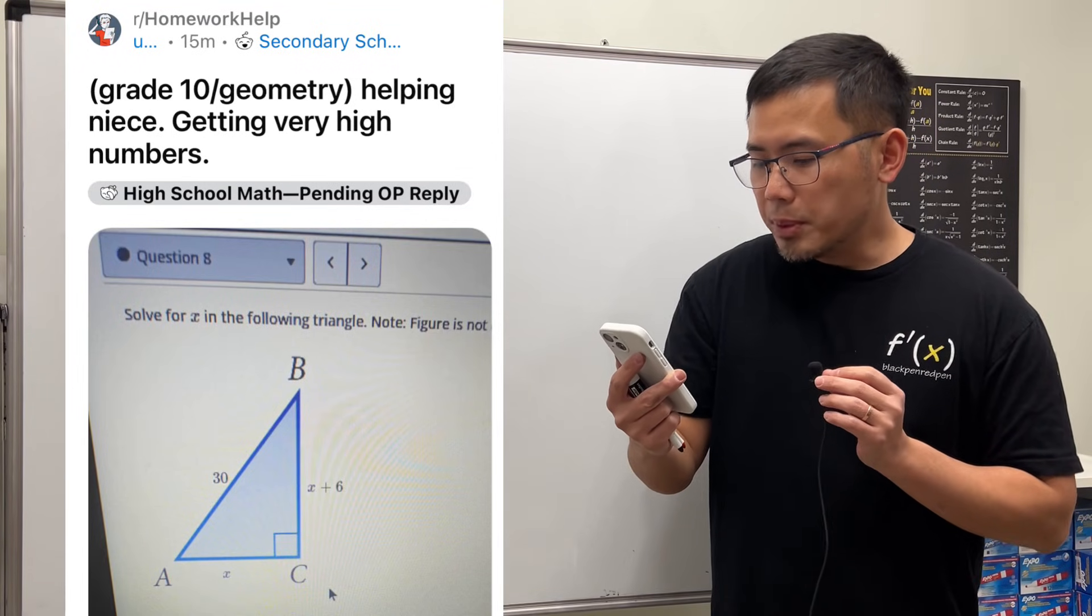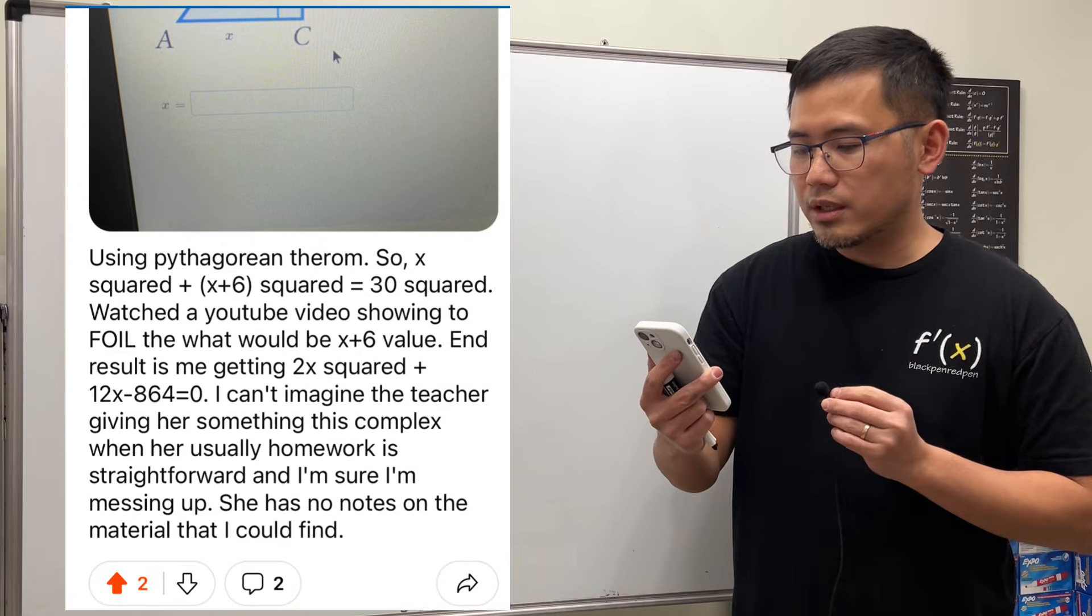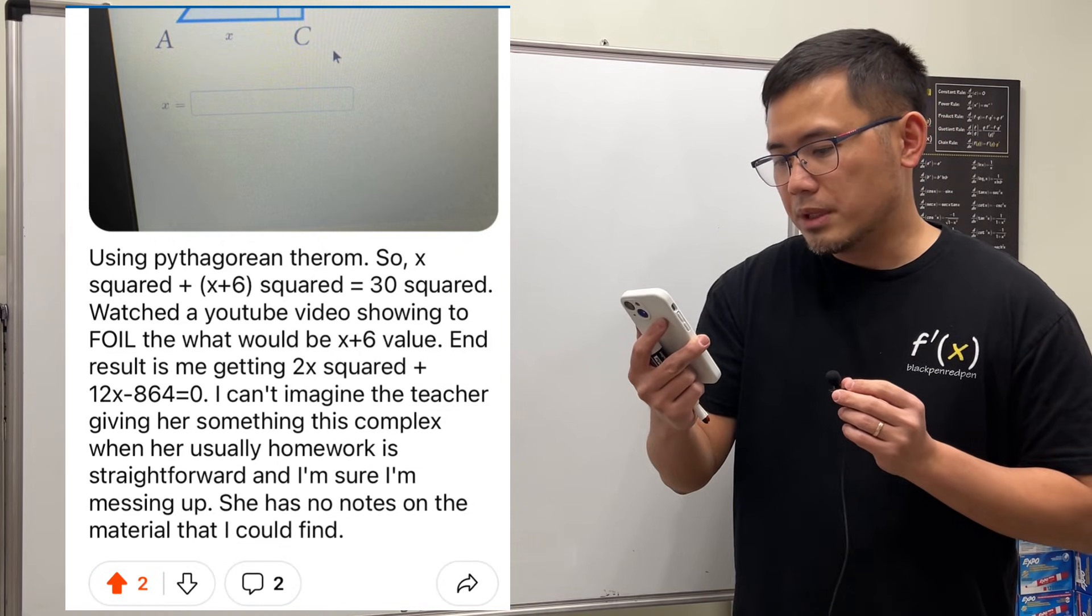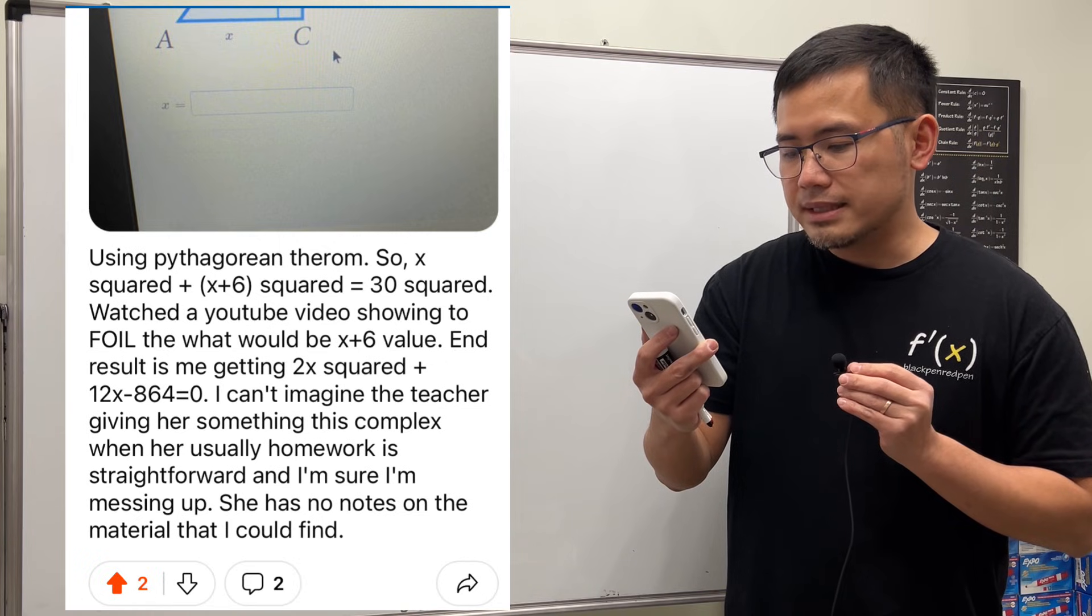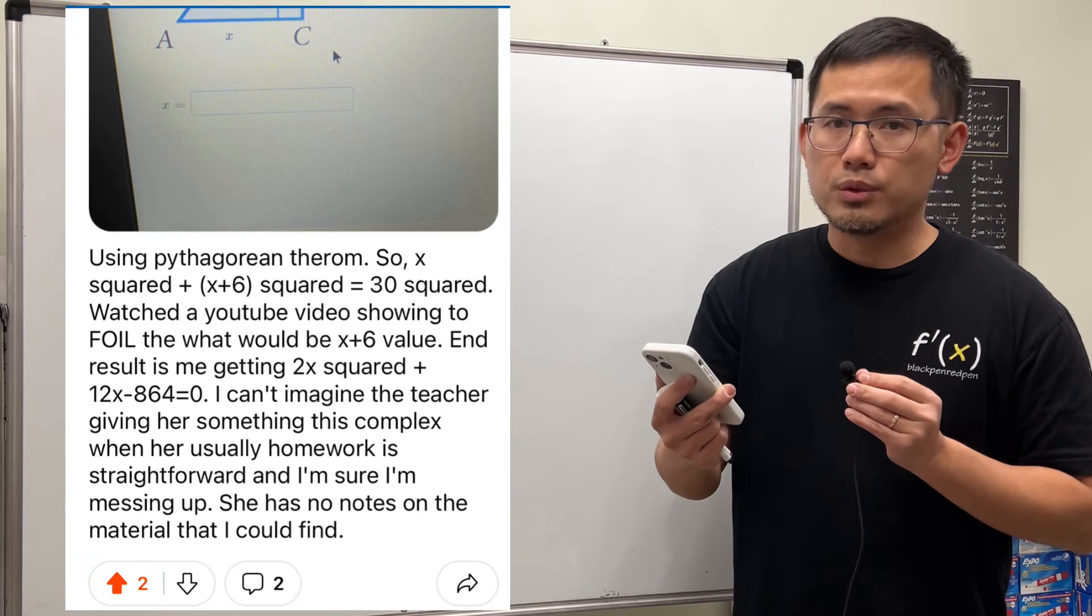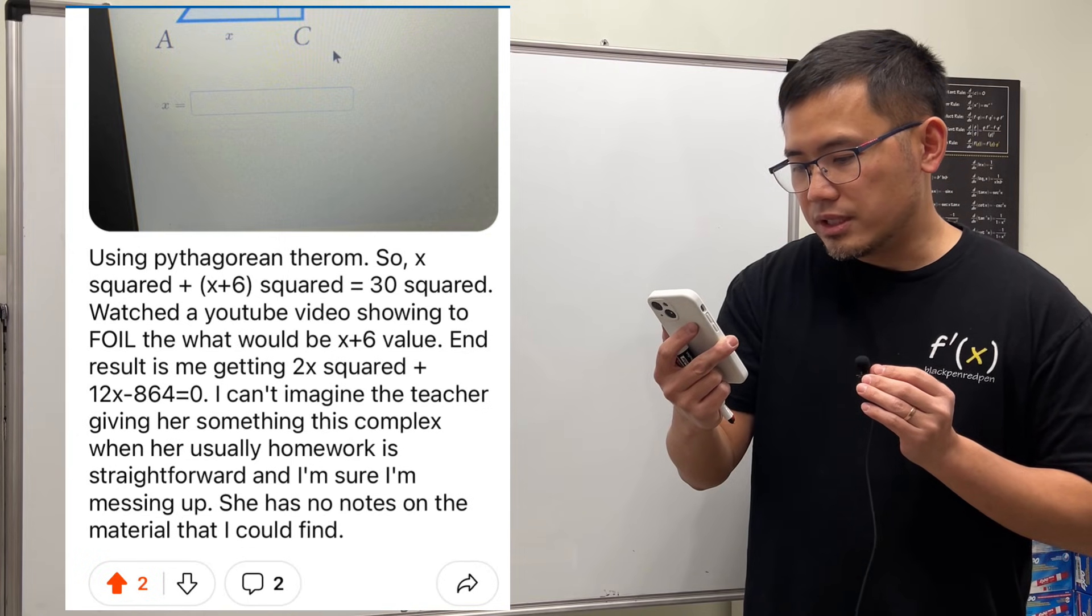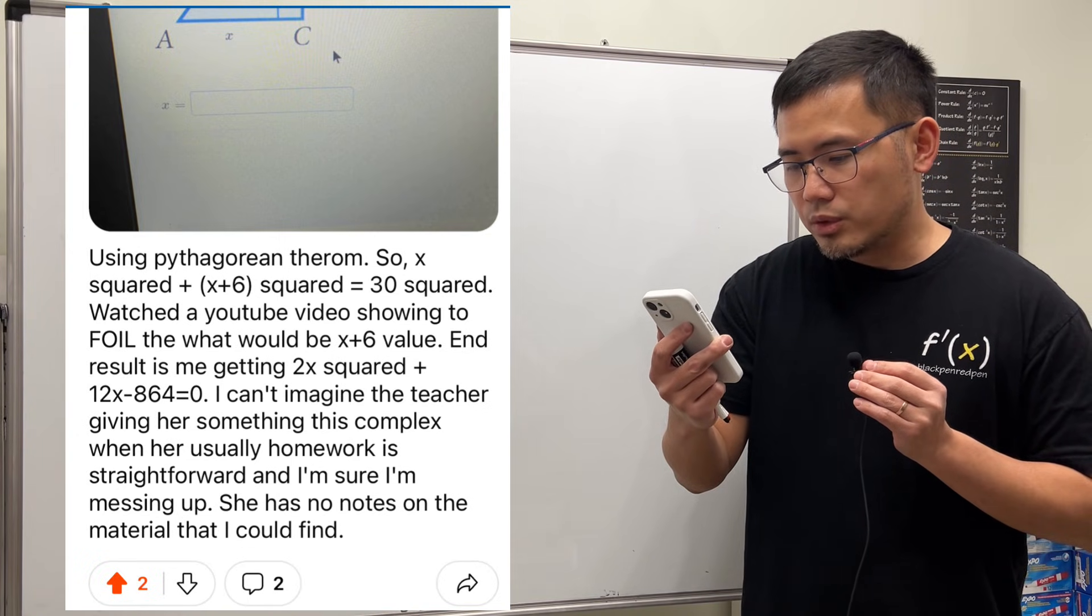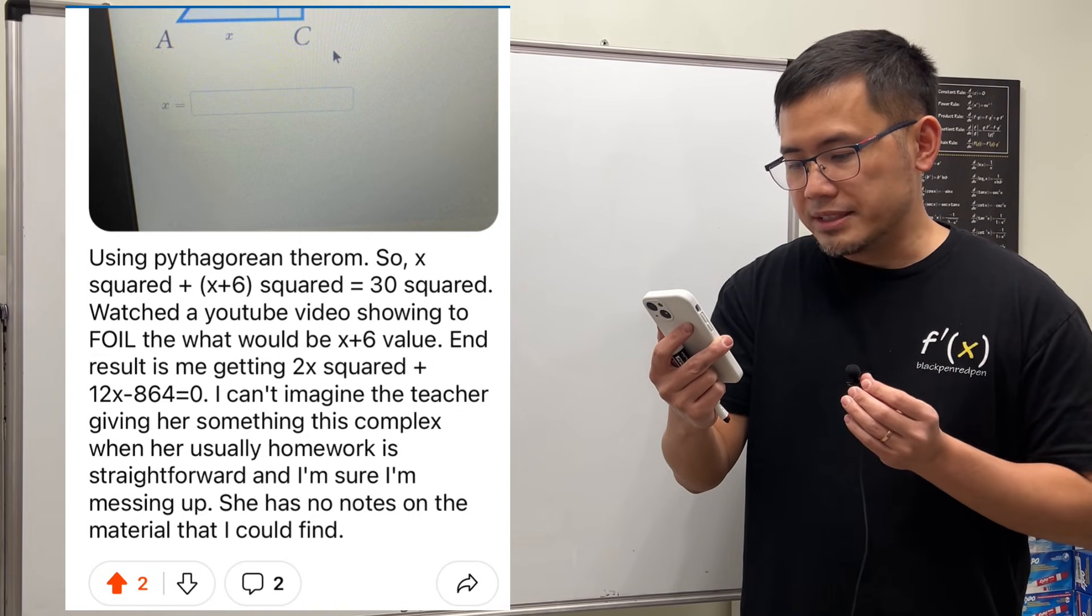Great hand geometry, helping knees, getting very high numbers. So here we have this right triangle, and you use the Pythagorean theorem, and you got the equation 2x² + 12x - 864 = 0. And then you said, I can't imagine the teacher giving her something this complex when her usual homework is straightforward, and I'm sure I'm messing up.